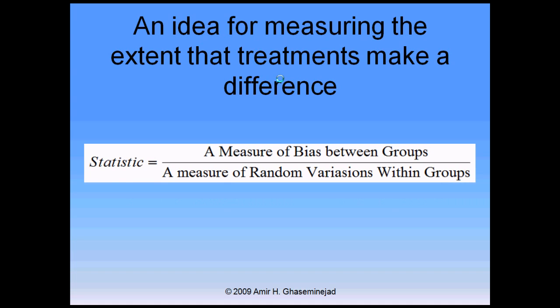If we divide a measure of bias between groups by a measure of difference within groups as a result of sampling variability, that would be a good measure for testing the hypothesis. If the treatments have really changed something in these three populations, then there would be a major bias between different groups, and when we divide it by the random variations that normally occur in the sampling process, that should give us a large fraction.